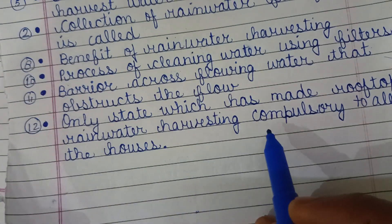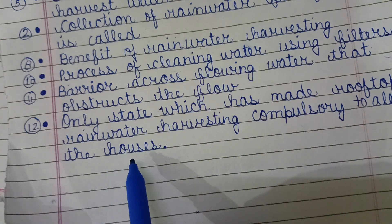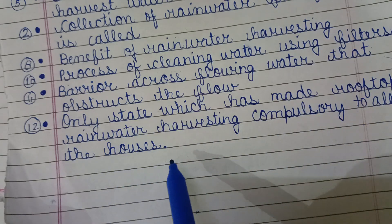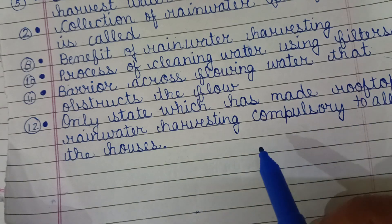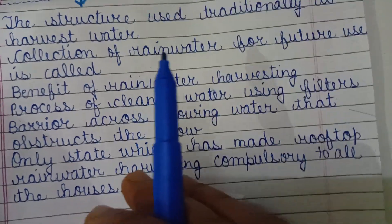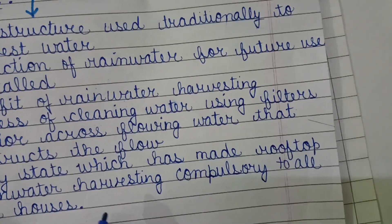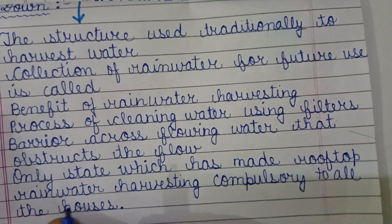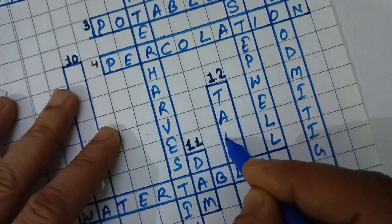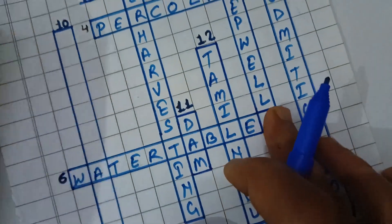The only state which has made rooftop rainwater harvesting compulsory for all houses is filled in 12 downward. The state is Tamil Nadu — T-A-M-I-L-N-A-T-U — Tamil Nadu.